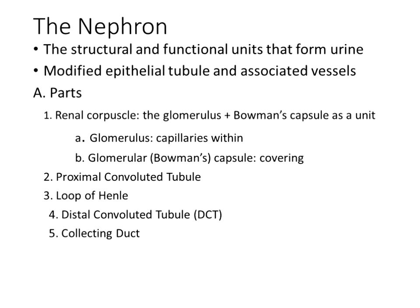The nephron has four main parts, and some books include the collecting duct as well. It is the structural and functional unit of the kidney that forms urine — a tube of epithelial-lined tubing and associated vessels, similar to the lung-blood interface, where we allow things to enter and leave the bloodstream, secreting into the filtrate or reabsorbing from the filtrate back into the bloodstream.